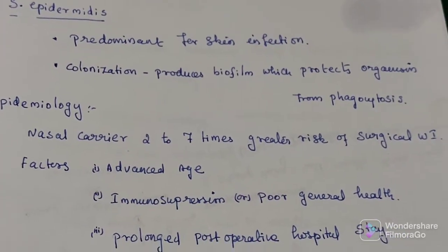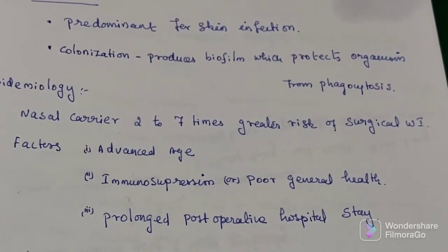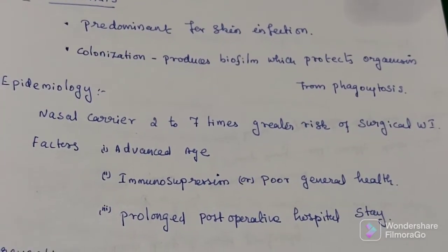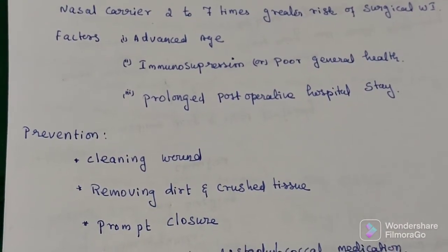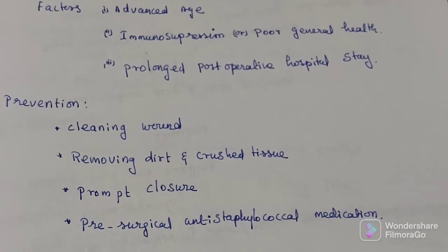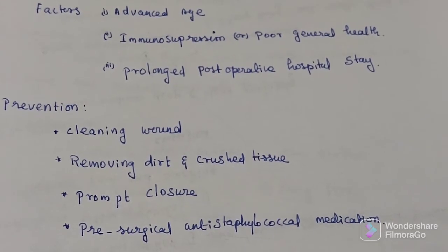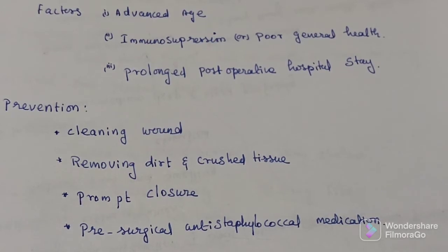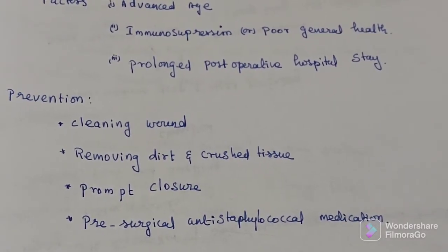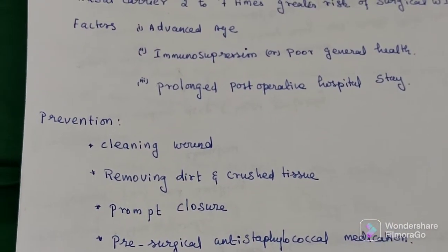Risk factors include advanced age, immunosuppression or poor health, and prolonged post-operative hospital stay. Preventive methods include cleaning the wound, removing dirty or crushed tissue, prompt closure, and pre-surgical anti-staphylococcal medication. Treatment involves applying ointment and antibiotics which stimulate the reparative process in the wound.